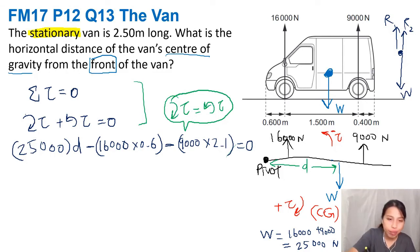But I write it all for you to see, so you can make sure. So you rearrange, rearrange, rearrange, find d. Let's go. So 16000 times 0.6, 9000 times 2.1, divided by 25000, 1.14. So then you can say that this weight force, which is the center of gravity of the van, has to be only 1.14 meters away from the front of the van. And that's how you can find the center of gravity for this van.